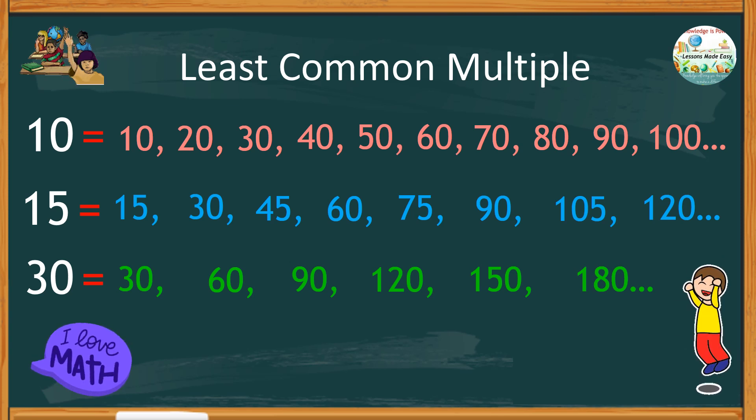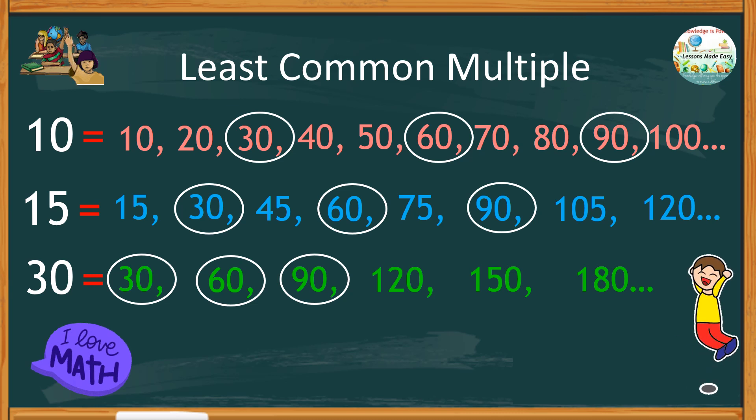From this listing, we can see the common multiples of ten, fifteen, and thirty are thirty, sixty, and ninety. And among these multiples, thirty is the smallest. Therefore, the least common multiple of ten, fifteen, and thirty is thirty.